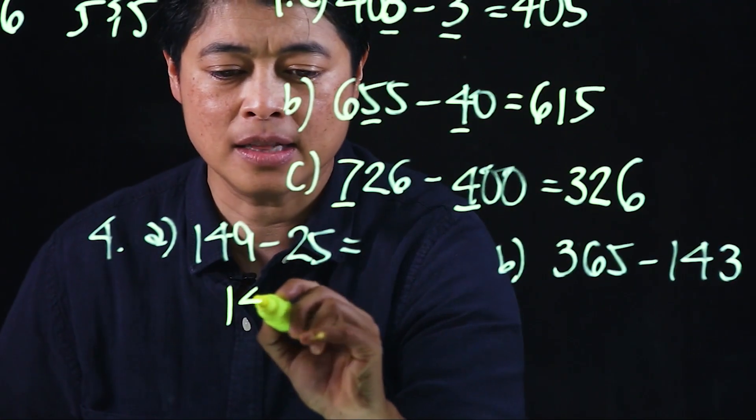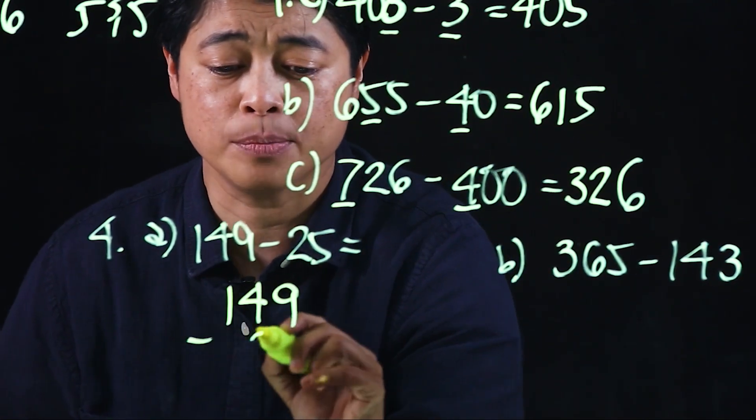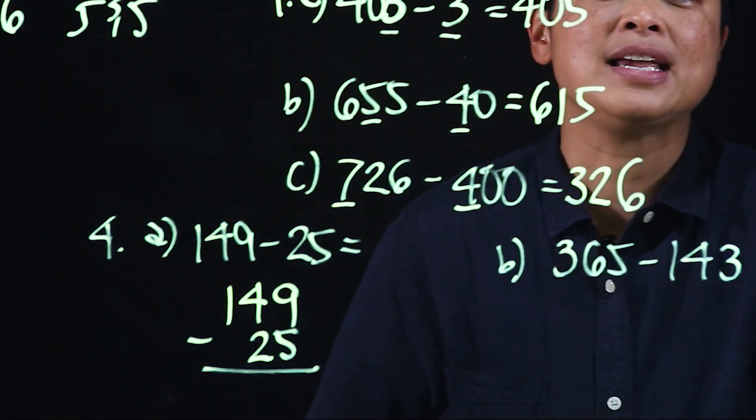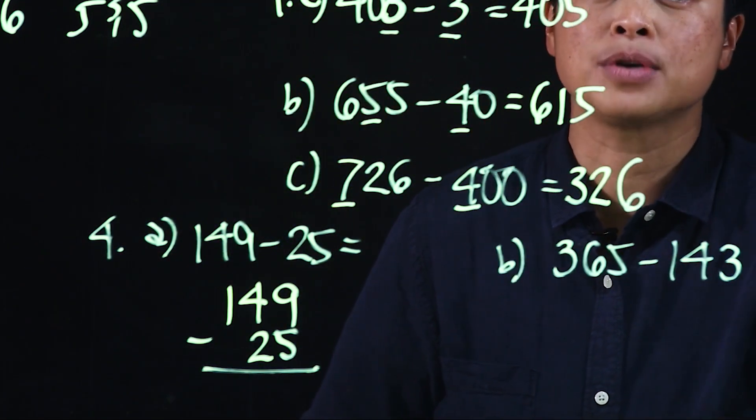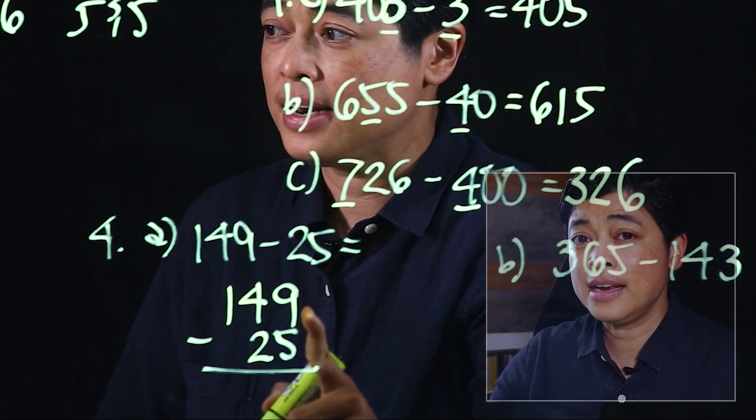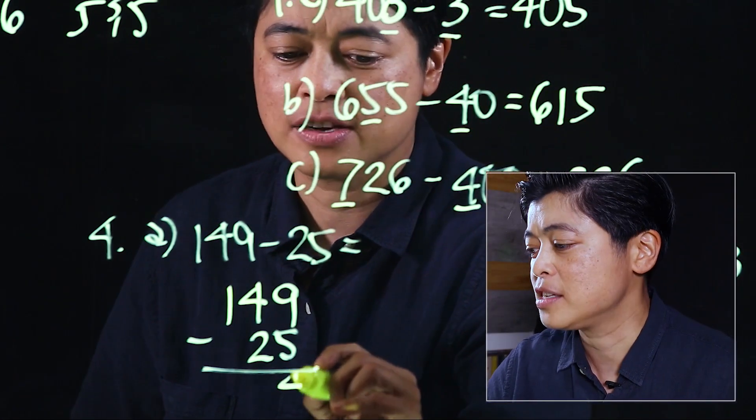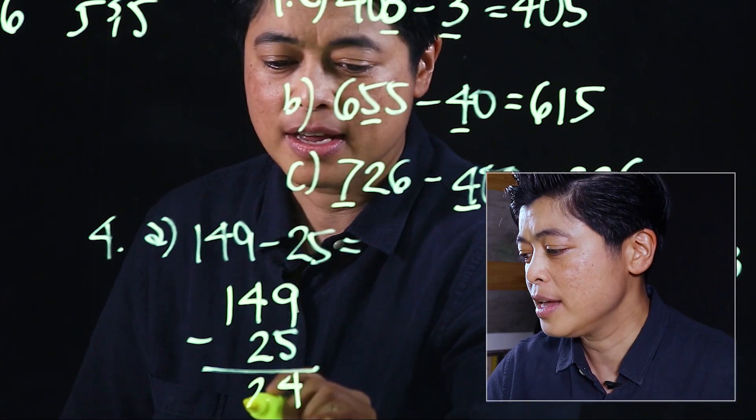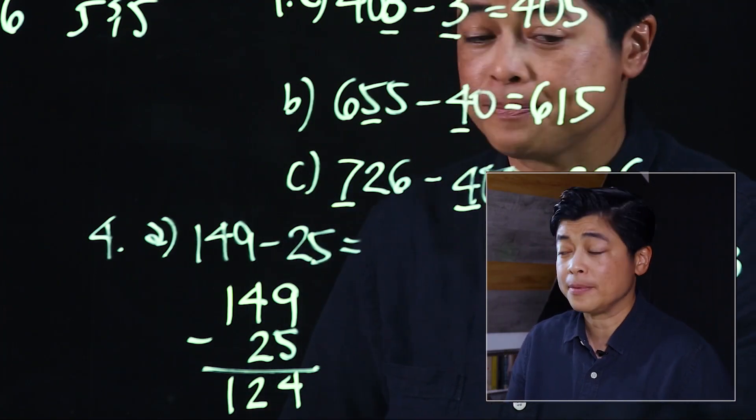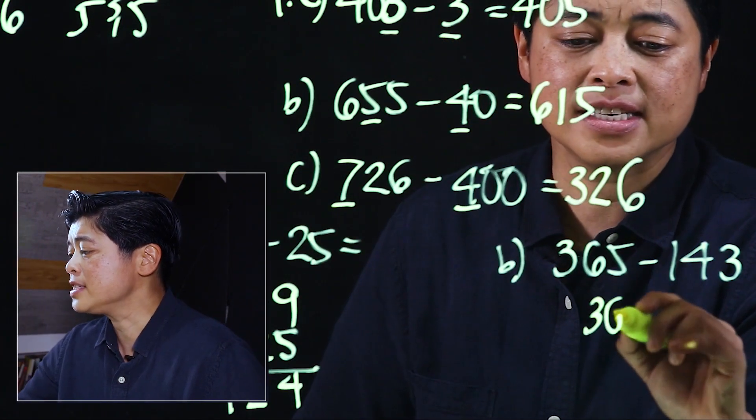So 9 minus 5 is 4, 4 minus 2 is 2, which means that's 124. 365 minus 143. Again this is simple subtraction, so 5 minus 3 is 2, 6 minus 4 is 2, and 3 minus 1 is 2, making it 222.